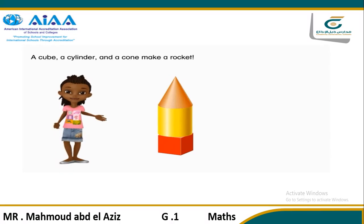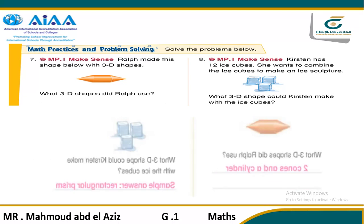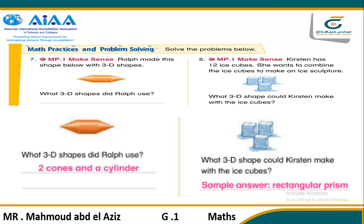Now you know how to put 3D shapes together to make other 3D shapes. With another question: Ralph made this shape with 3D shapes. The question here is: what 3D shapes did Ralph use? Look at the picture. You can see in the middle we have a cylinder and 2 cones. So our answer here will be 2 cones and a cylinder.